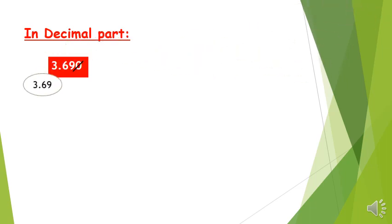So 3.690 is equal to 3.69, since the zero is at the end and it has no value.